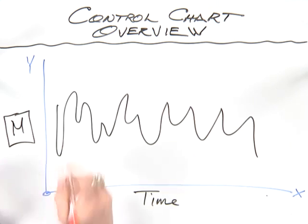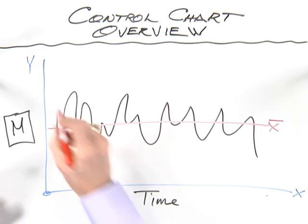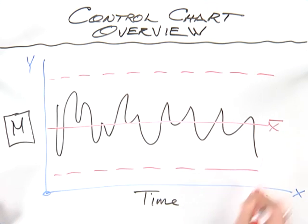We're going to have as our center line the mean, x bar, and we're going to have our upper and our lower control limits, UCL and LCL.